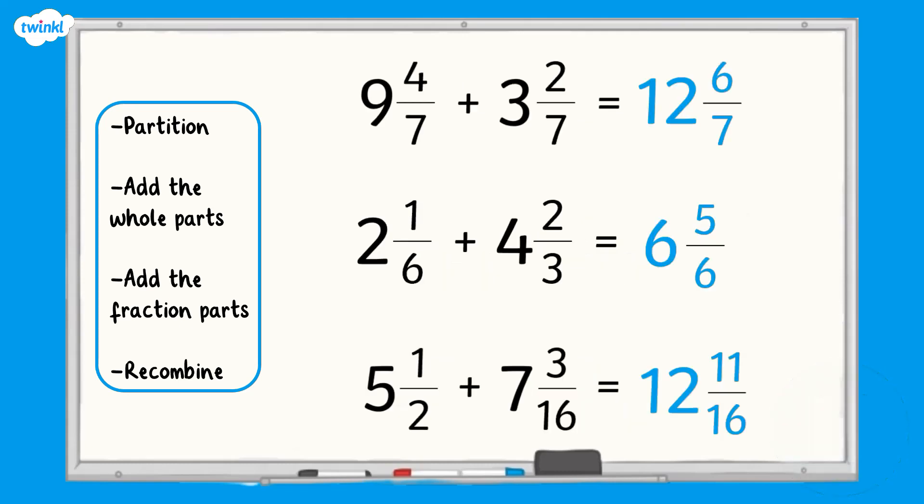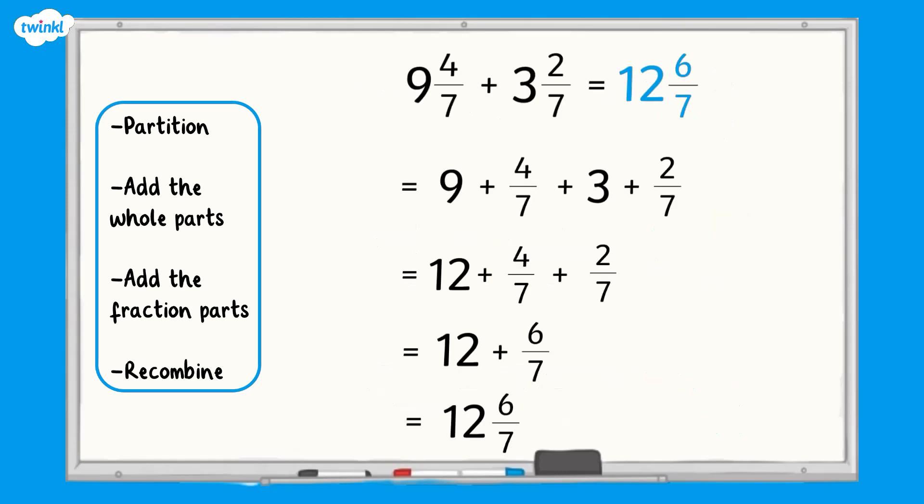How did you get on? Check your answers and fix any mistakes. Pause the video again if you need to take a closer look at the workings. Nine and four-sevenths add three and two-sevenths equals twelve and six-sevenths.